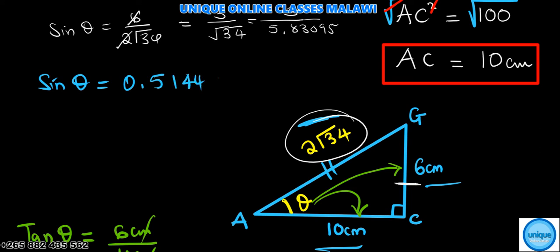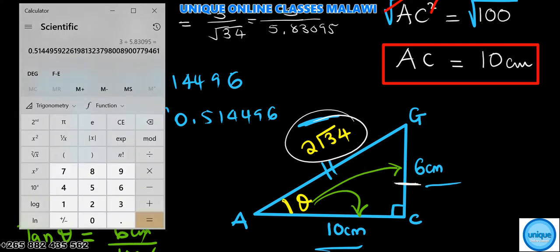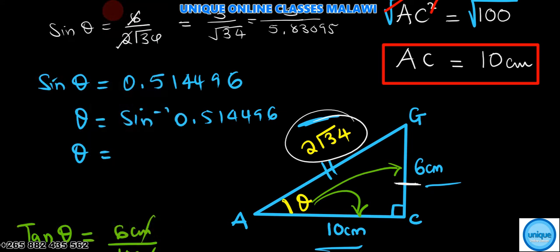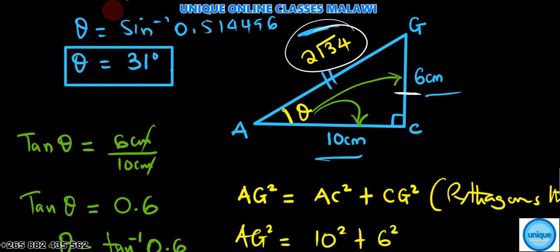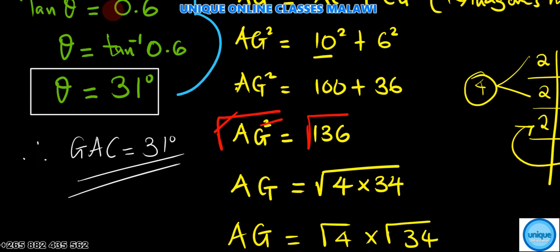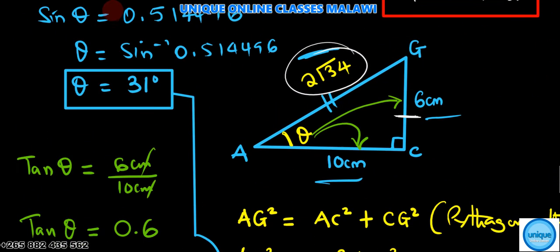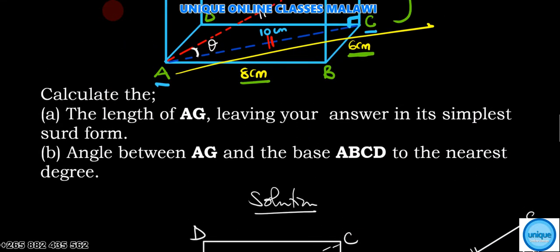Sine theta equals 3 divided by 5.830951, which equals 0.514496. To find the angle, theta equals sine inverse of 0.514496, which is 30.9637. To the nearest degree, that's also 31 degrees. You can also try using cosine - the answer will be the same.